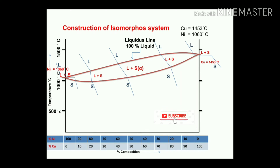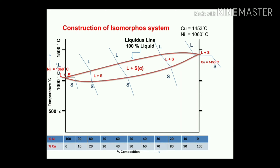Similarly, I want to draw a line passing through the end point of the solidification process. After that point, for all compositions, the material becomes a single solid — because copper and nickel have 100% solubility in both liquid and solid state. That line is called the solidus line.